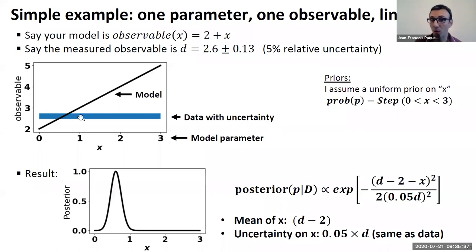Now, this is a very simple example. You can almost read the answer, right? You can see that some region here is what will be favored by the data, right?